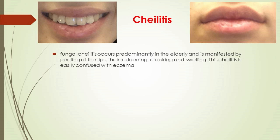Exfoliative cheilitis is initially determined by swelling of the lips; because of pain, the patient cannot completely close the mouth. A lesion occurs not only on the surface of the lips but also on the mucous membrane. With development of the disease, large scales appear on the lips; when these scales are removed, red inflamed tissue is exposed. This form occurs chronically and is complicated by problems with the thyroid gland.